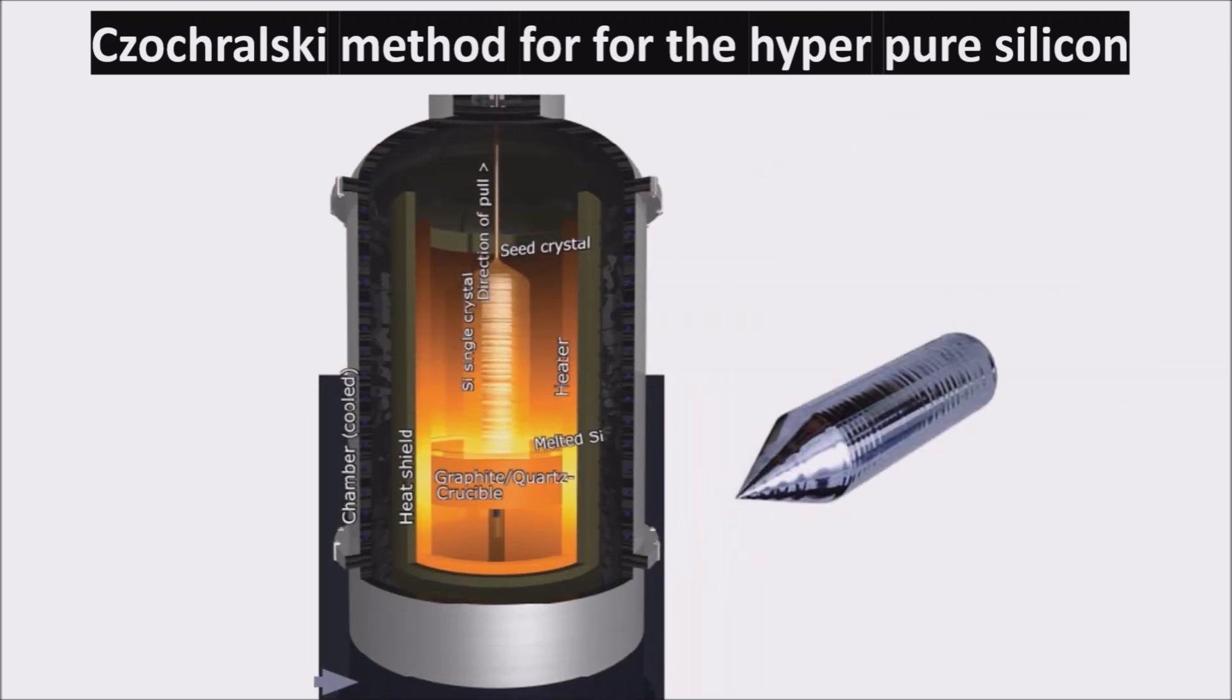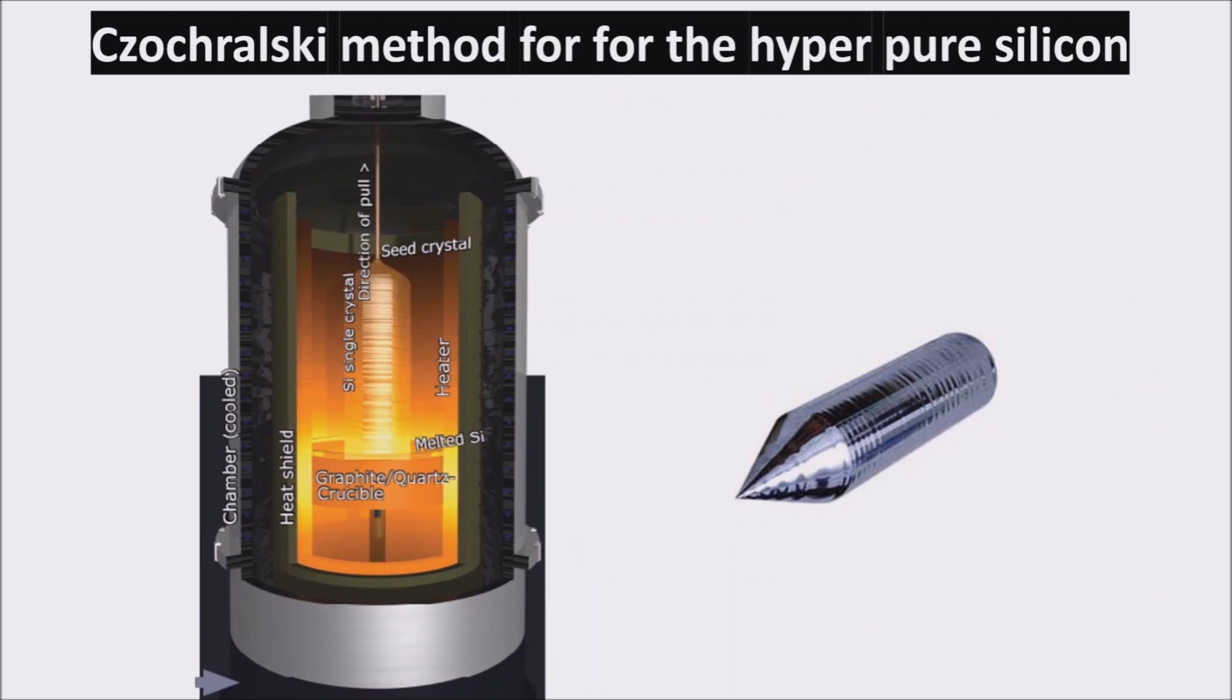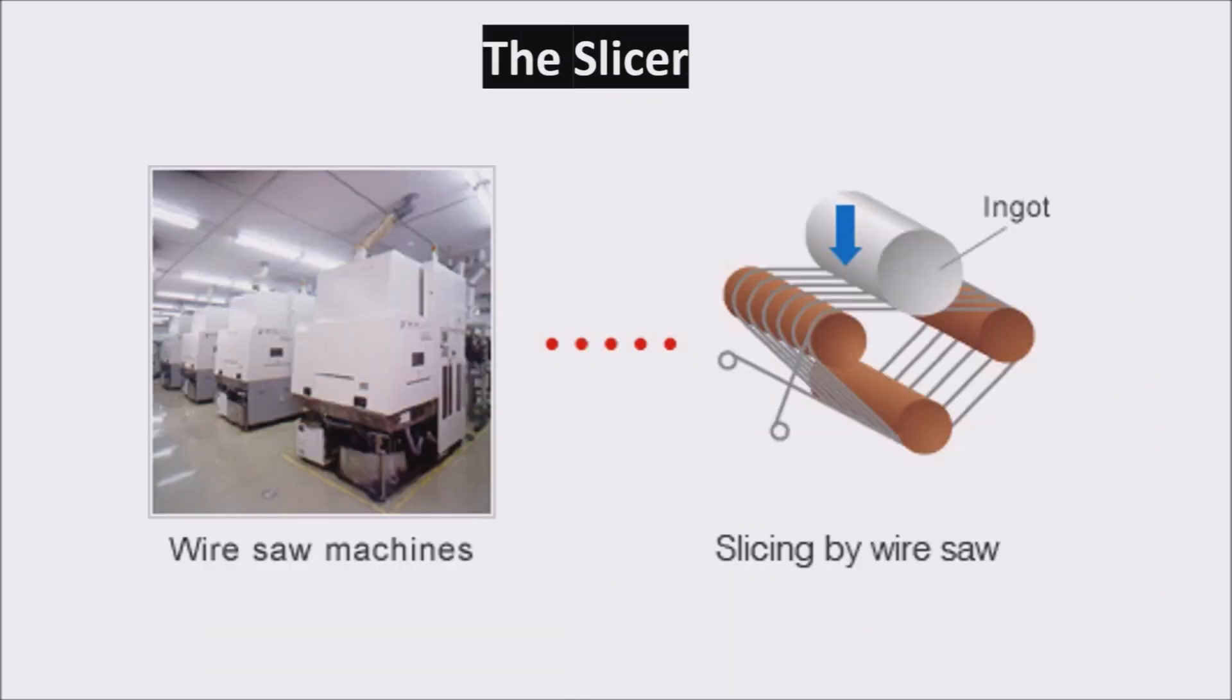And this is the final result, the silicon ingot. The silicon ingot is now chopped into slices with a special saw, and this is why the wafers have a circular shape.